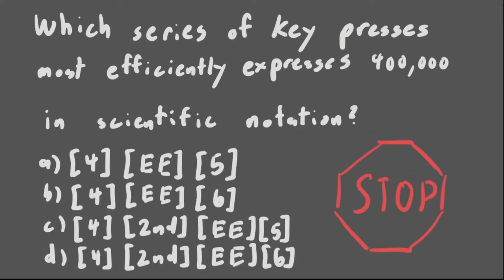Let's try this example. Which series of key presses most efficiently expresses the number 400,000 in scientific notation? Alright, nice. So, 4E5 is just 4 times 10 to the power of 5, which is 400,000.